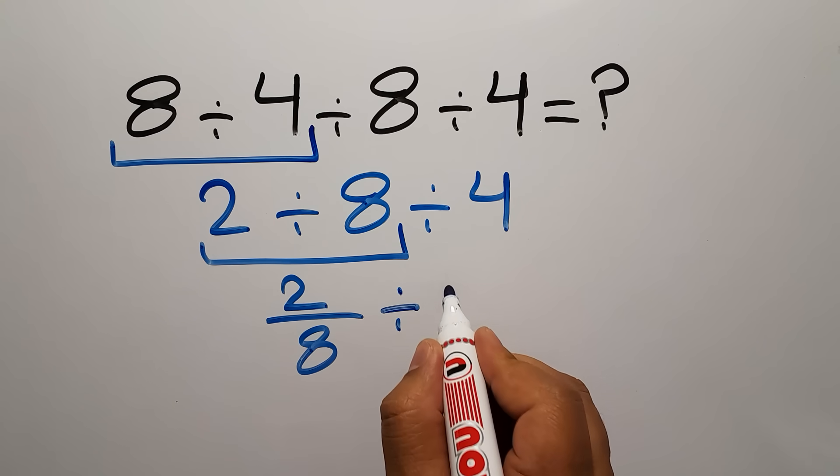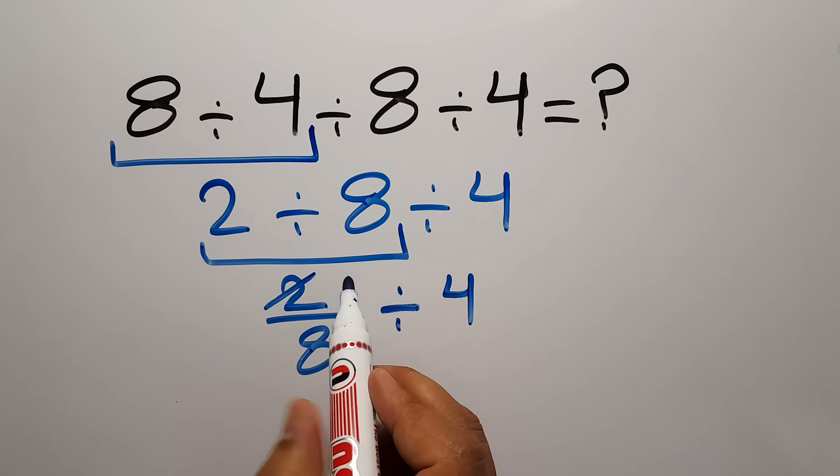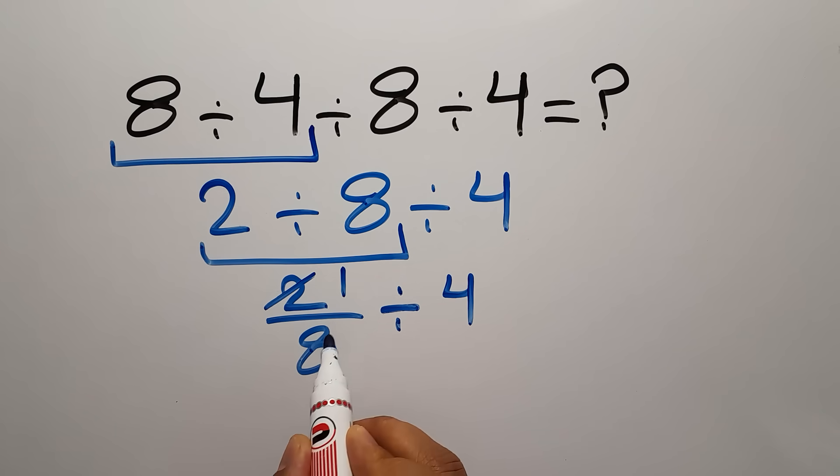2 divided by 2 gives us 1, and 8 divided by 2 gives us 4. So we have 1 over 4.